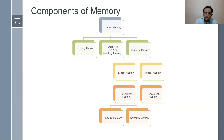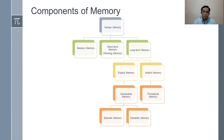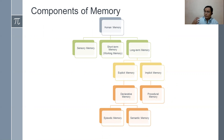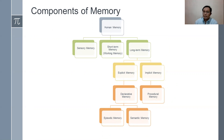In long-term memory, we have explicit memory and implicit memory. Explicit memory is our conscious memory — what we use in everyday life. Implicit memory refers to skills and abilities we have learned and use unconsciously.